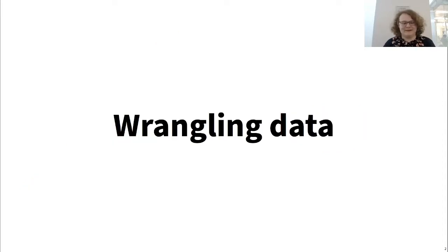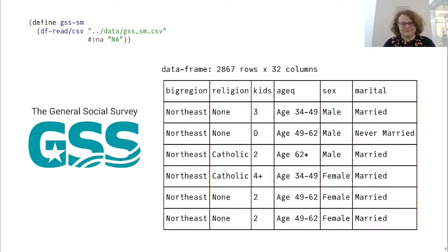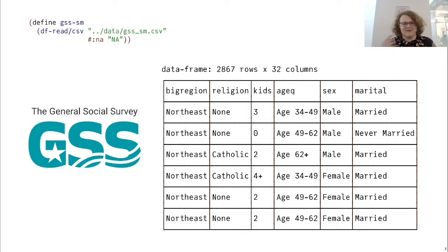First, we'll take a look at how Sozl acts on some standard datasets. In particular, to start off this talk, we'll take a look at the general social survey from the year 2016. This data has various individual level preferences about different people. For example, we know that there is a male in the Northeast that is between the ages of 34 and 49 by looking at the first row.